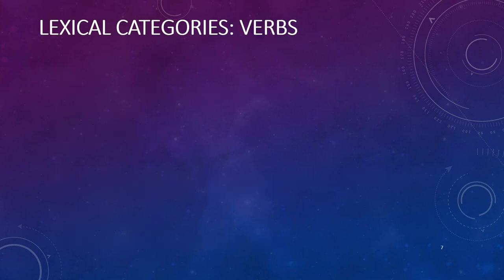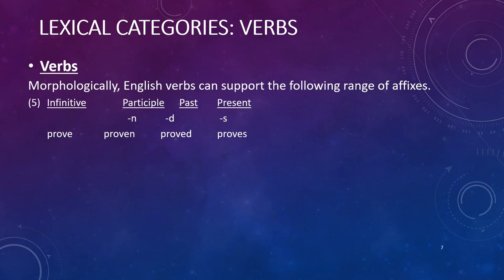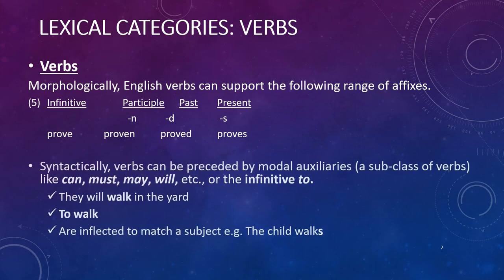Moving on to verbs: morphologically, English verbs can support the following range of affixes. The infinitive form tends to be bare, as in 'to prove.' It can have a past tense marker, like 'proved,' a present tense marker like 'proves,' and a present participle like 'proving.' Syntactically, verbs can be preceded by modal auxiliaries — a subclass of verbs — which include 'can,' 'must,' 'may,' 'will,' etc. You can also have the infinitive marker 'to,' so 'they will walk in the yard' — here 'walk' is preceded by the modal 'will.' You can also say 'to walk' or 'not to walk,' where the infinitive form is preceded by 'to.'